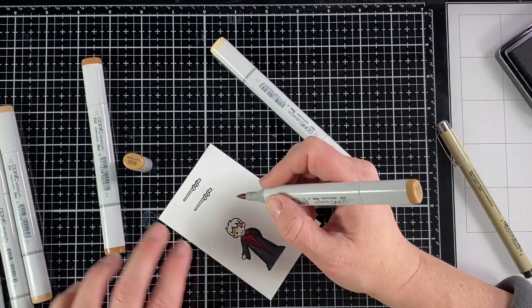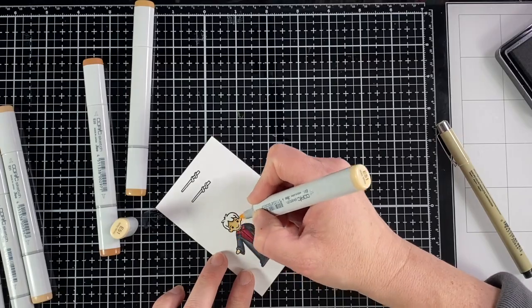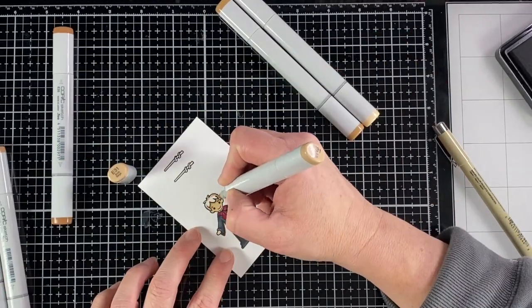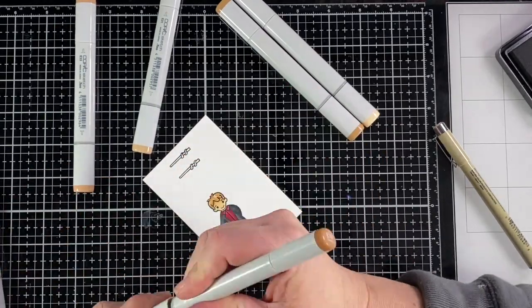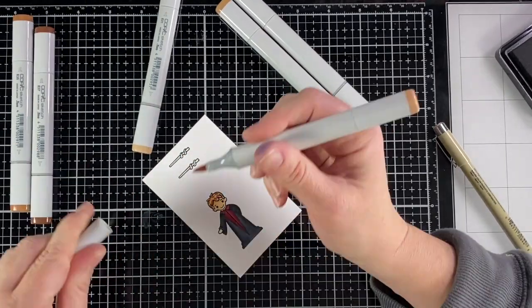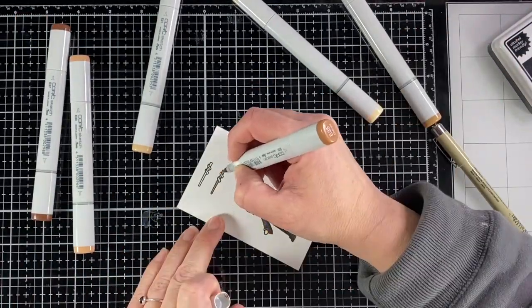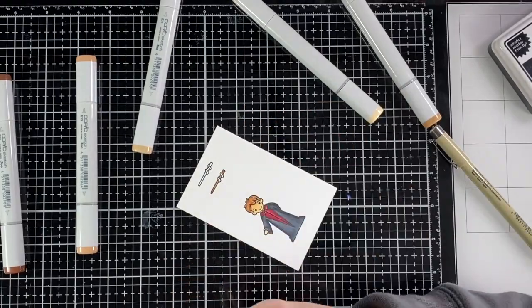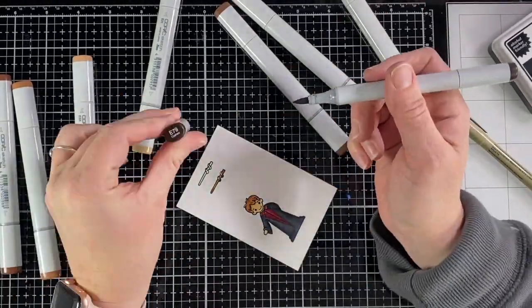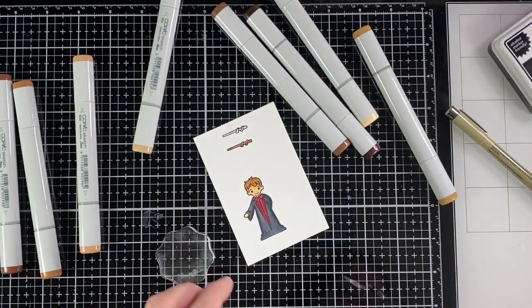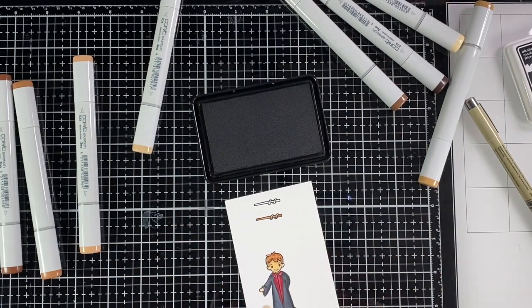For his face I used E51 for the lighter base and then E55 for the darker shading. Then for his hair I used several different E's as well - E33, E31, E35, and E37. On the wand I used the darker browns. You can see those all up on the screen. Then I went ahead and added his glasses and there now he definitely looks like Harry.